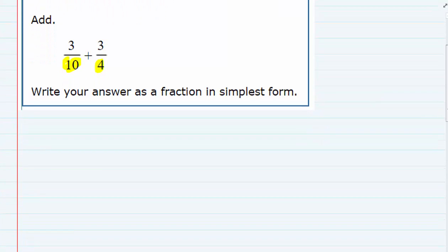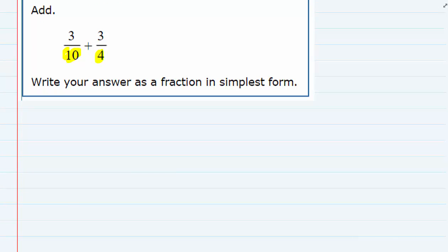So first things first, we're going to have to fix that, and to do that we'll need the lowest common multiple of the numbers 10 and 4. So if we were to think of all the multiples of 10, all the multiples of 4, the smallest one that they have in common is 20.